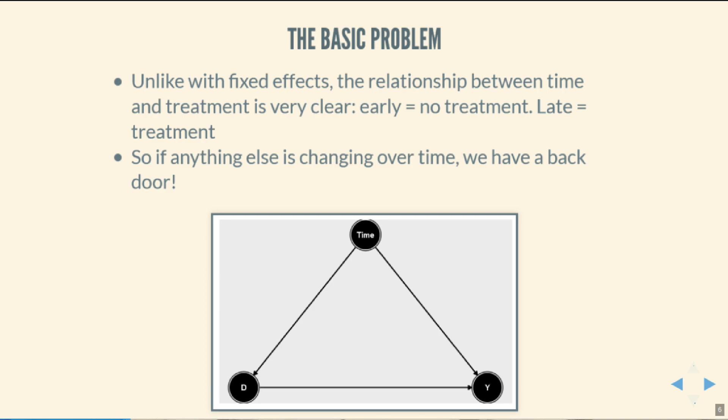We're going to call the outcome Y, and we're interested in the effect of D on Y. What we have here is a group that we can observe before the treatment went into place and also after. You can imagine anytime we have some bill or policy put into place, we can observe what was happening beforehand and also afterwards. But that's not enough to establish causality — there's likely to be some sort of back door, something else that was changing over the same time period that could have caused changes in the outcome besides the treatment itself.